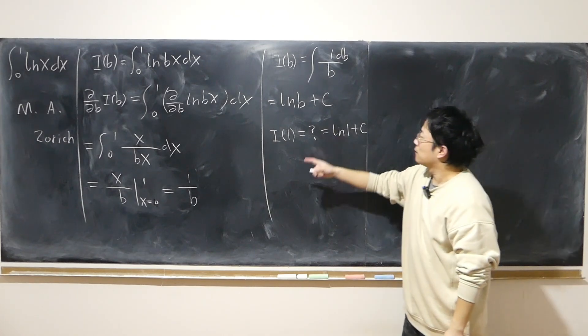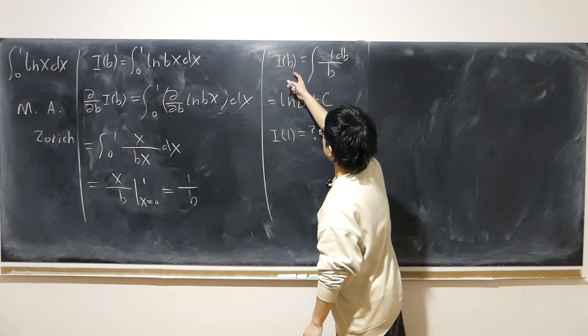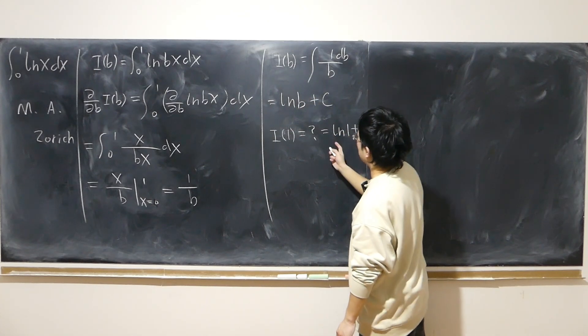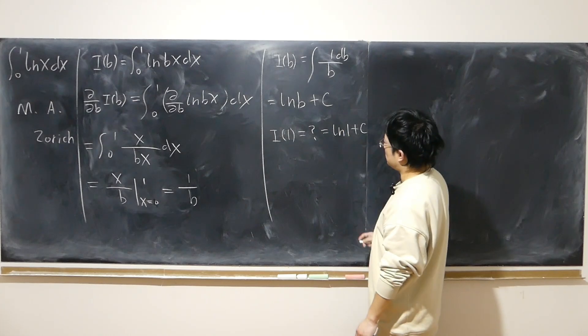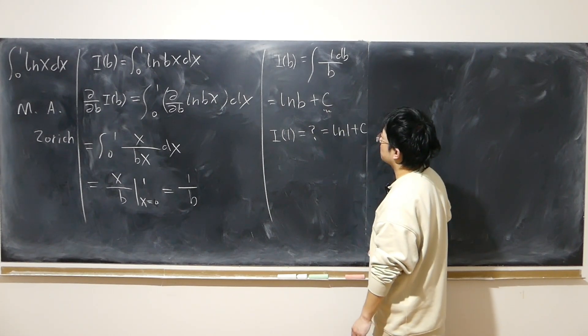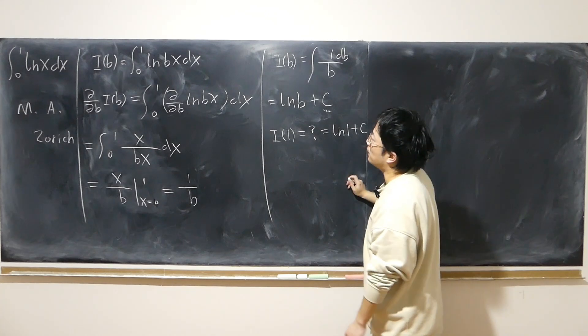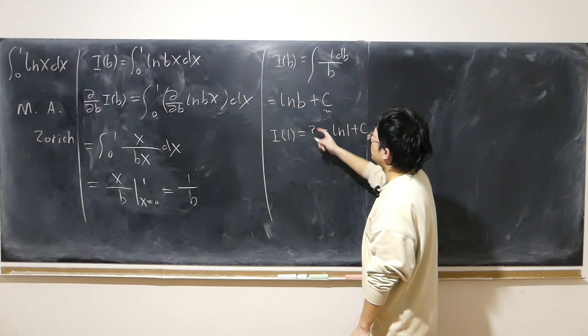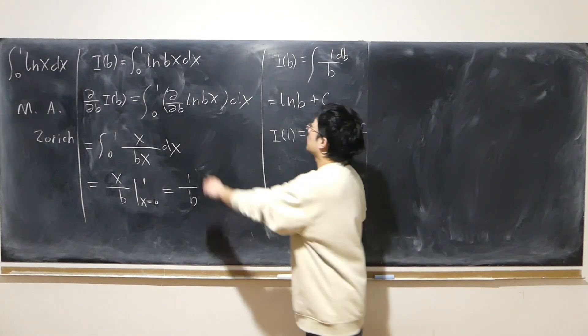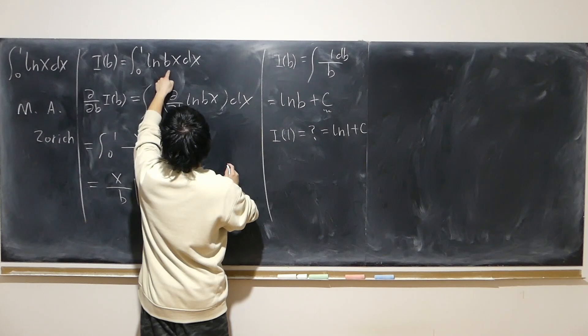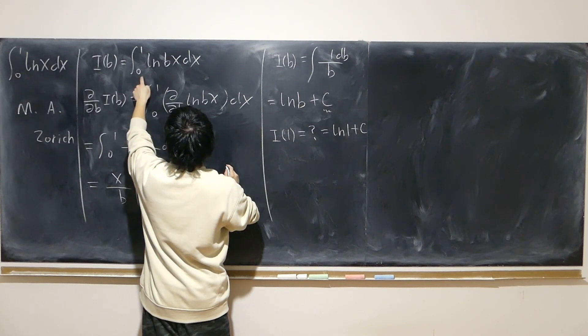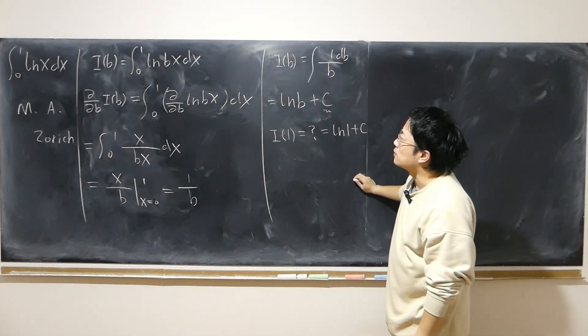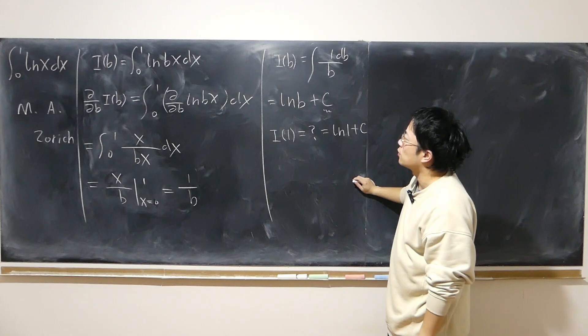I know when I plug 1 into here, I already know log of 1, what that is. But what is c? Can I plug some special value? Don't think so. If I plug b into 0, log of 0, negative infinity, integrate from 0 to 1. Useless. I don't know what that means. So, helpless.